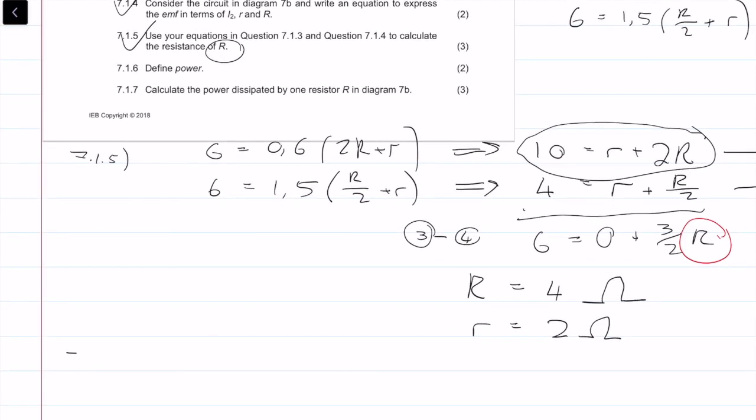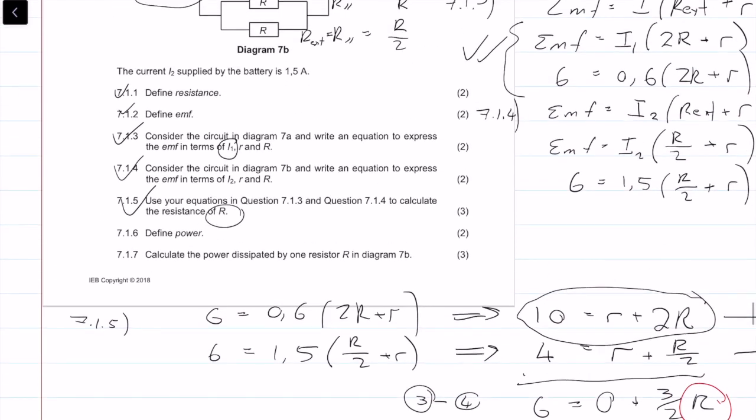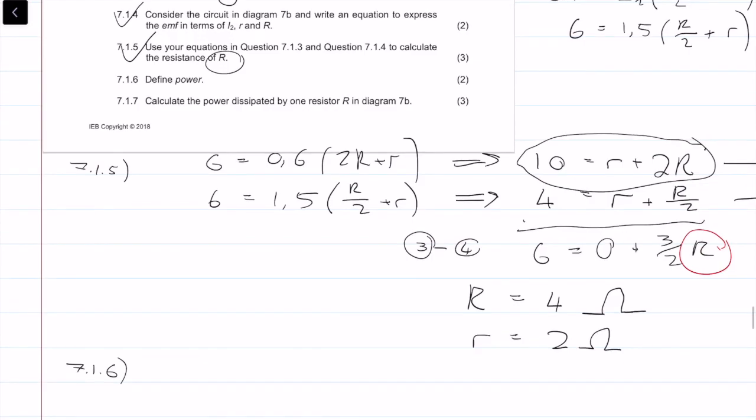Next question, 7.1.6, another definition. It says define power. Power is the rate at which work is done. That's an acceptable definition.